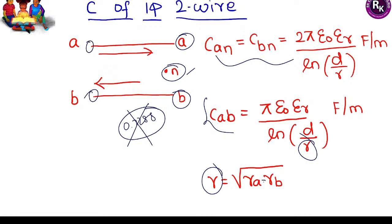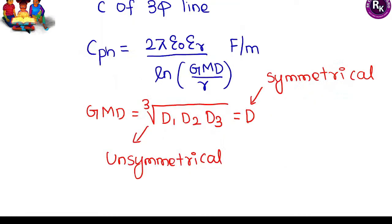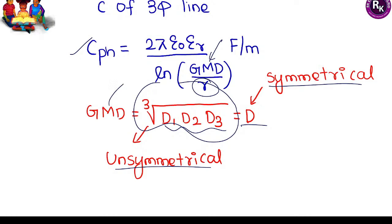For capacitance with two conductors having the same radius, ra equals rb equals r, so under the square root r² simplifies to r. The formula's D is essentially GMD and the denominator is GMR, but since self-GMD is not used for capacitance, we directly take the radius without the 0.7788 factor. For a three-phase line, the conductor radius is directly substituted; for symmetrical configuration, the cube root simplifies to d; for asymmetrical, the GMD formula must be applied.